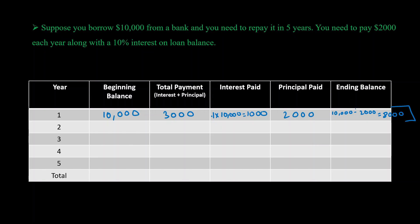Moving on to year two: the ending balance from year one becomes the beginning balance for year two, so we have eight thousand dollars. We pay ten percent interest on eight thousand dollars: 0.1 × 8,000 = eight hundred dollars. Principal is again two thousand dollars, so the total payment is two thousand plus eight hundred, which is twenty-eight hundred dollars. The ending balance becomes eight thousand minus two thousand, equal to six thousand dollars.